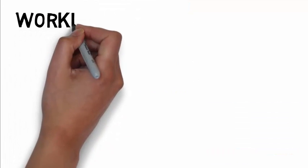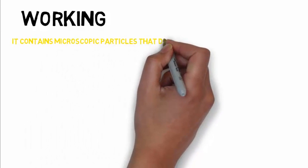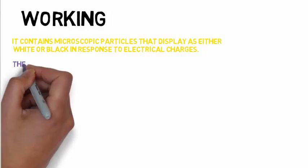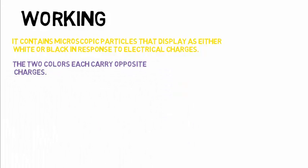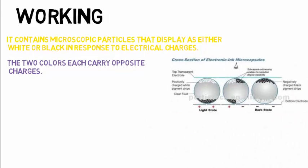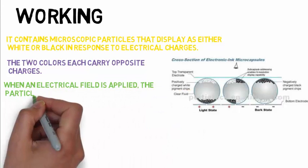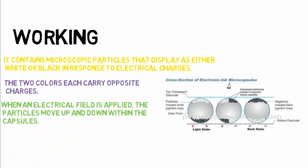Now coming to the best part of e-paper, that is how it works. E-ink consists of millions of microcapsules containing black and white particles. As there are two colors, one having positive charge while the other is having a negative charge. Whenever a negative electric field is applied across the section, the white particle moves to the top and becomes visible, while the black particles are pulled down and are hidden. And this is how we are able to see different images and content.